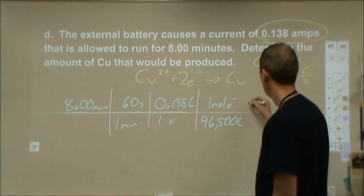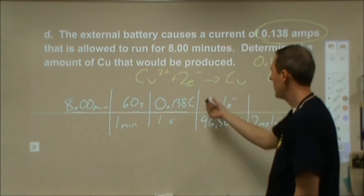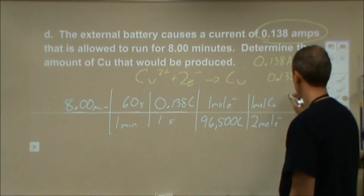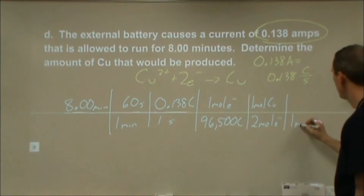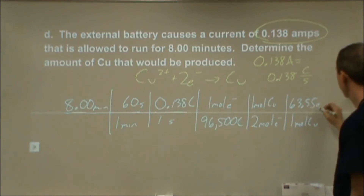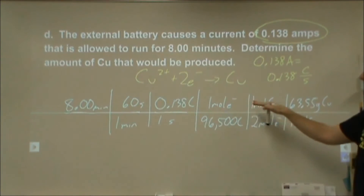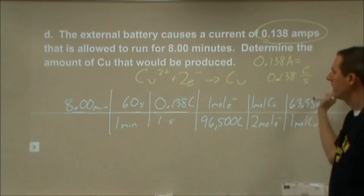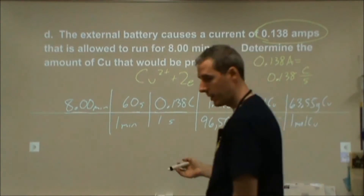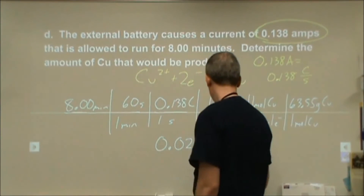Now I'm changing the charge into moles of electrons, and then treating those moles of electrons as a reactant: 2 moles of electrons produces 1 mole of copper. Then the last step is changing moles of copper into grams. So taking 8 × 60 × 0.138 × 63.55 ÷ 96,500 ÷ 2, the result is 0.0218 grams of copper produced.